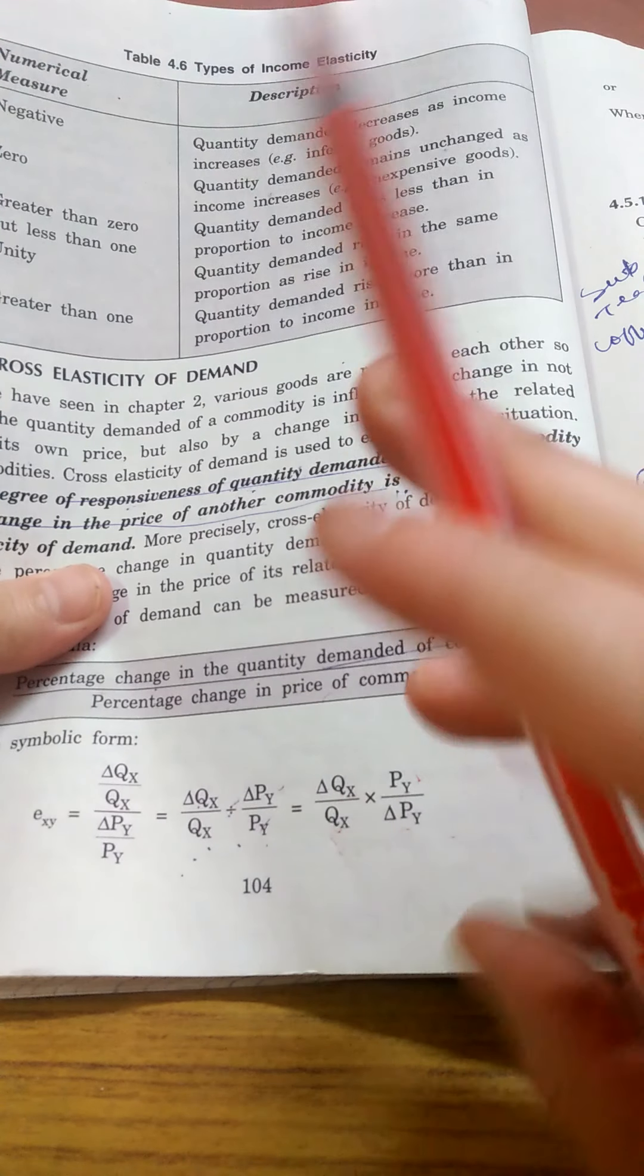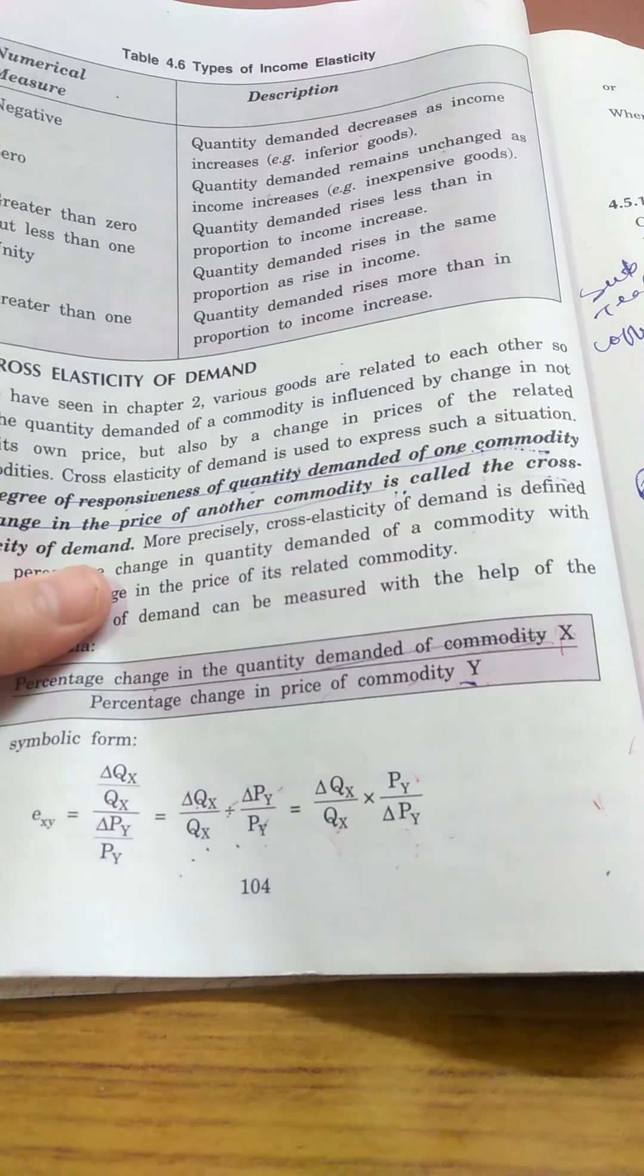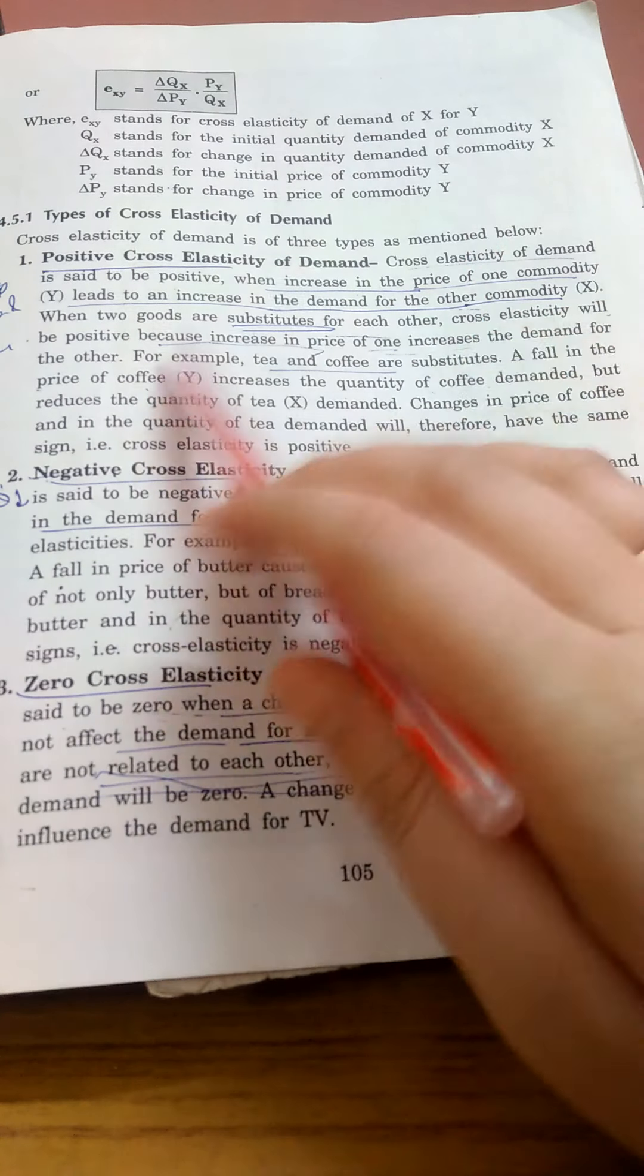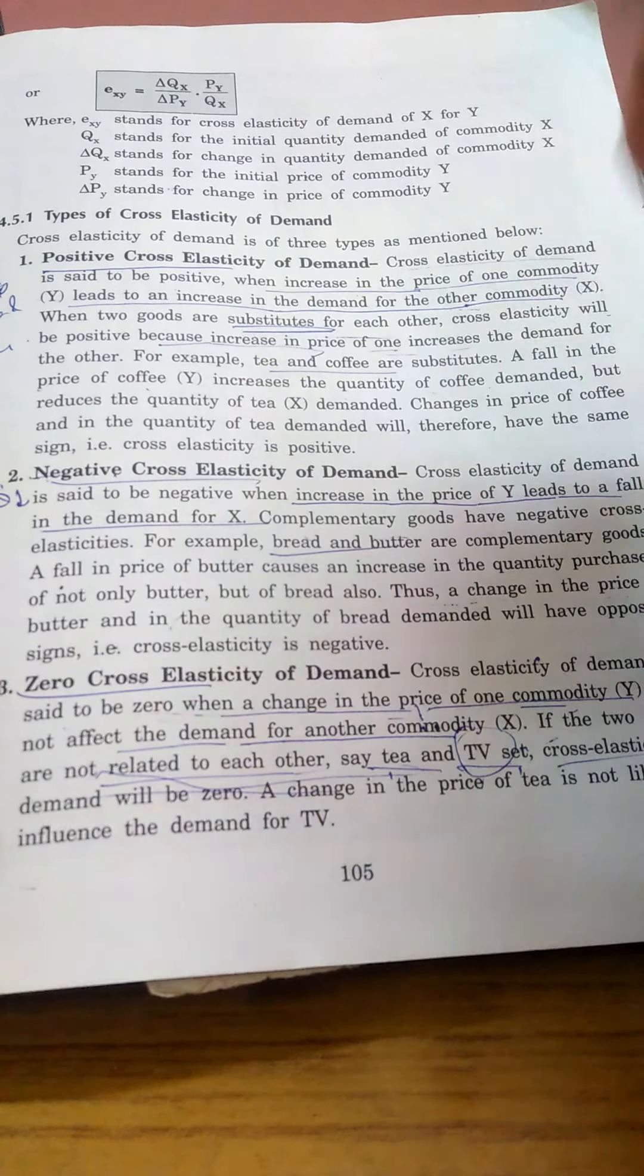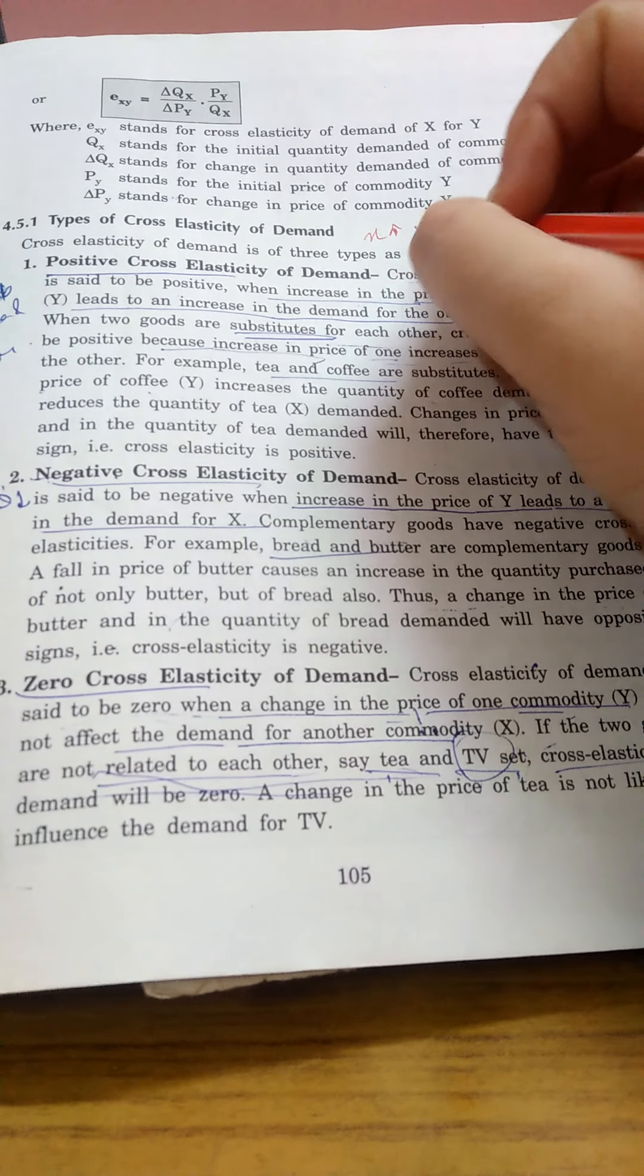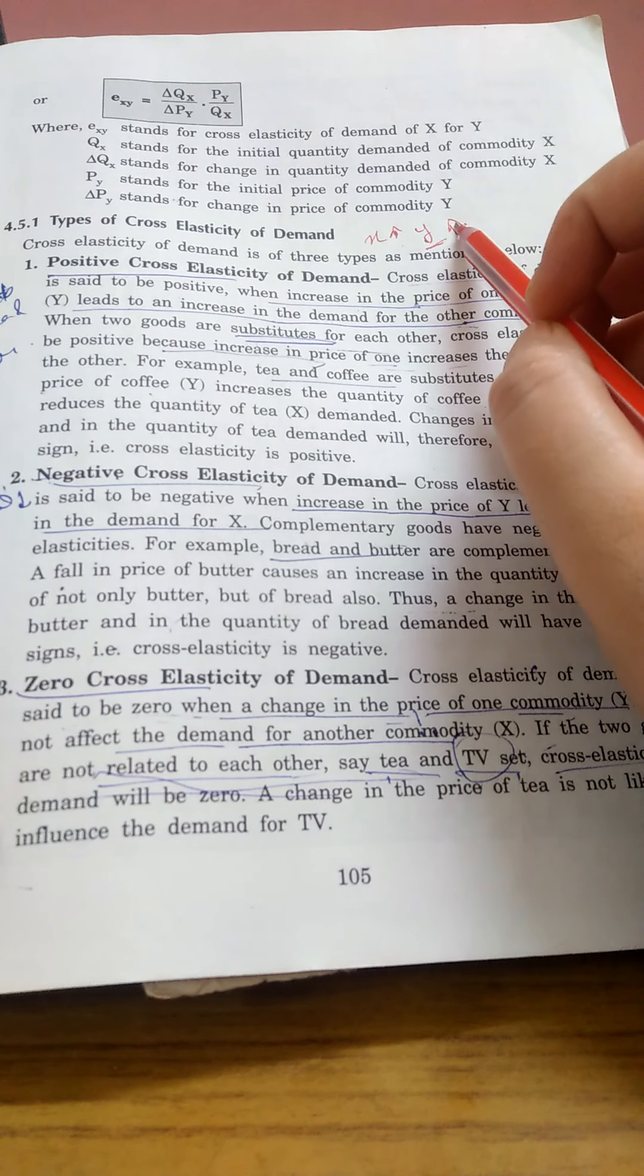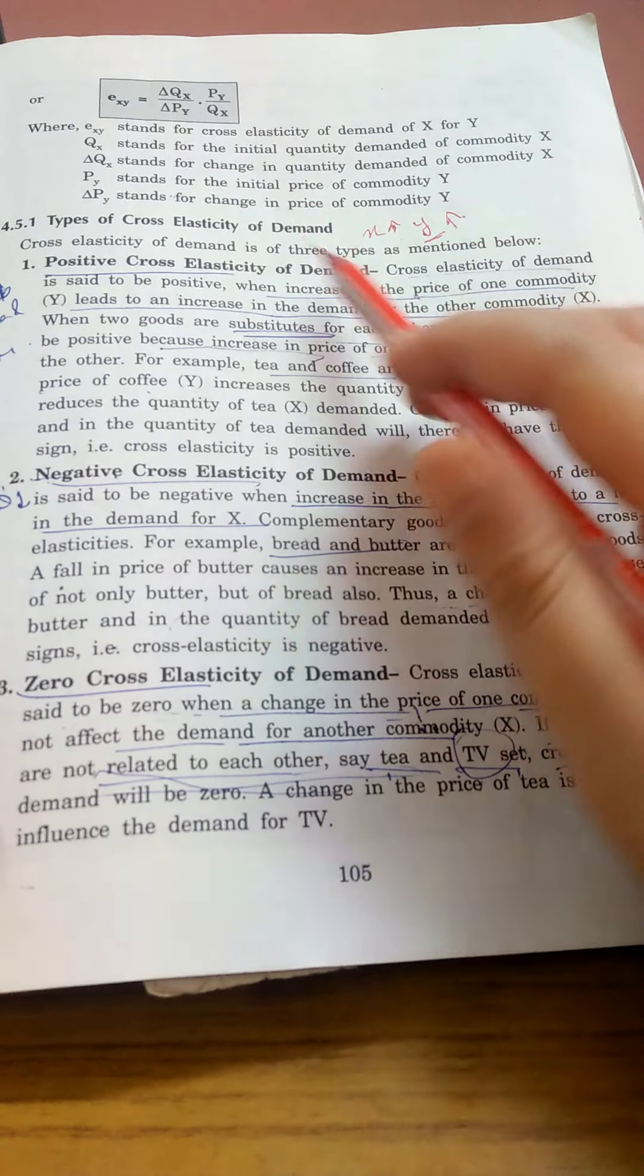Cross elasticity of demand has three types: positive, negative, and zero. First one is positive cross elasticity of demand. This means there is a positive relationship between both goods. If price of one commodity increases, say X commodity, then demand of another commodity Y will increase.